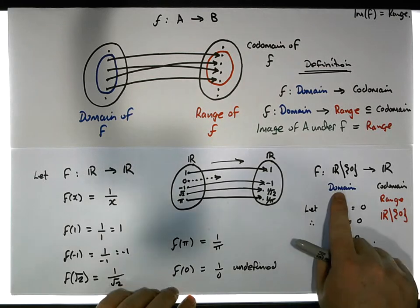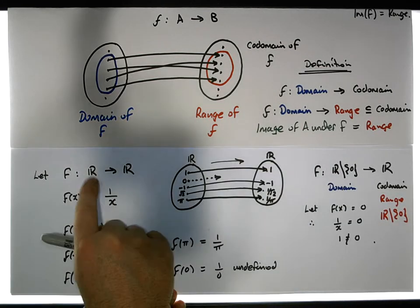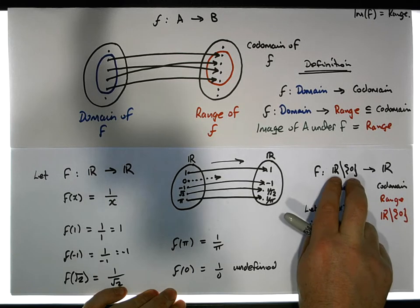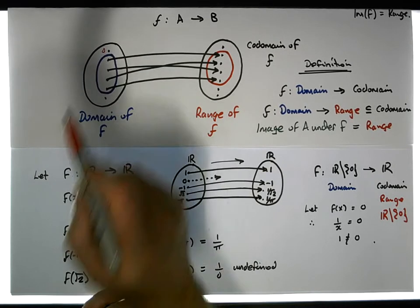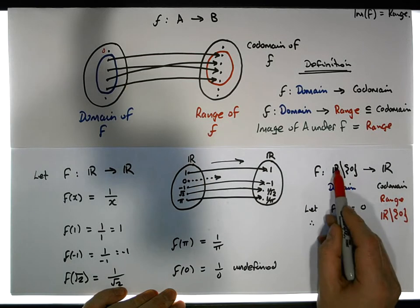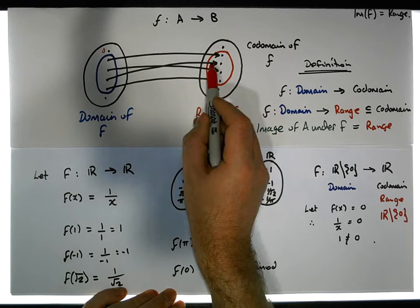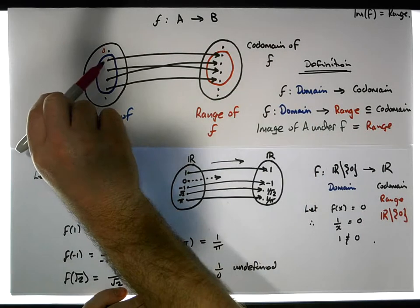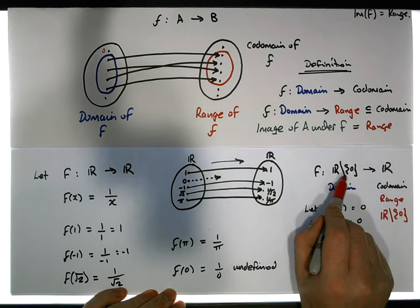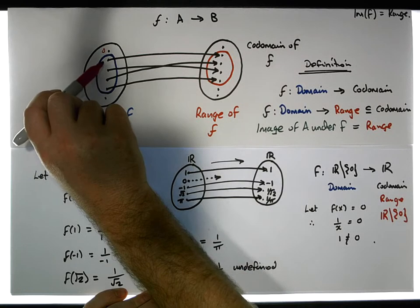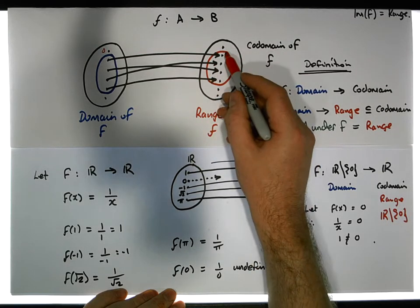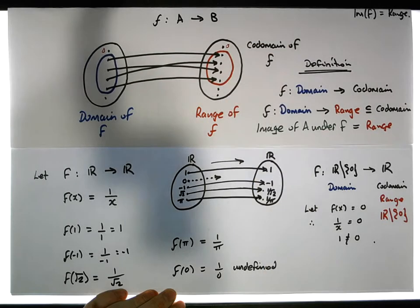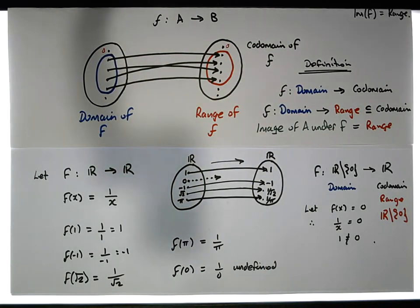Let's say f of x equals zero — well, that means one over x is equal to zero, and from that we get one is equal to zero, which is not true. So you can see that all values excluding zero are definitely mapped into the reals, but zero is a number in the reals that is never mapped into. f of x can never equal zero. So the range of this function — albeit the codomain is the reals — the range is actually the reals exclusive of zero.